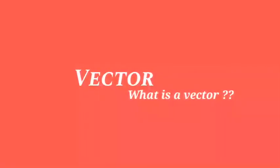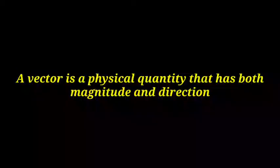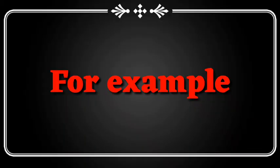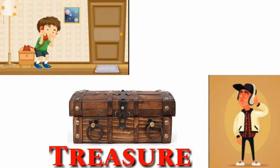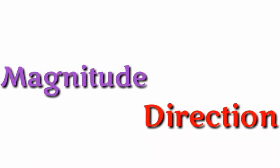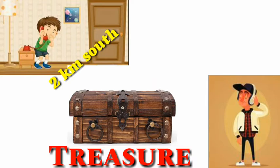In your school physics you often come across the word vector. So what is a vector? A vector is a physical quantity that has both magnitude and direction. To understand it better, suppose your friend tells you on a phone that there is a treasure and the call disconnects. You would ask: where is the treasure? That means you want to know how far from your house and in which direction the treasure is kept. Your friend tells you it is 2 kilometers south from your house.